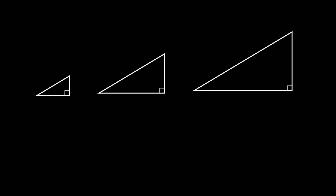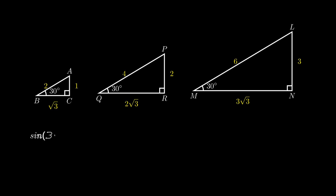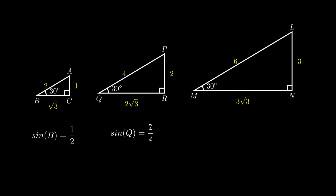For example, consider three triangles ABC, BQR, and LMN. In each case the acute angles B, Q, and M respectively are 30 degrees. The three triangles vary in size. If we find sin B, sin Q, and sin M, we find in each case we get the answer as one half. This is because the angle in each case was the same.